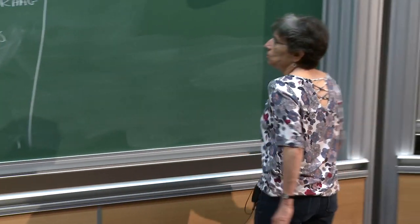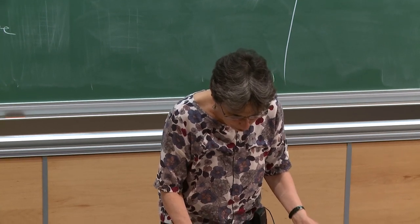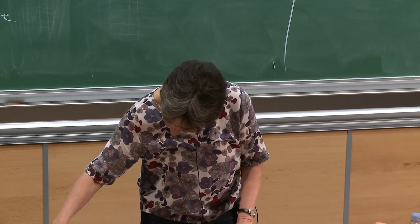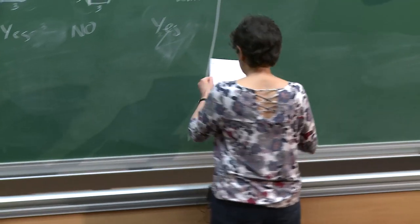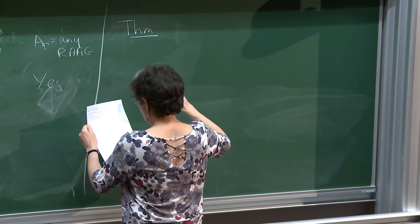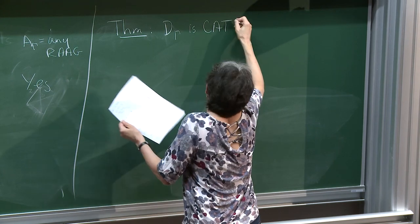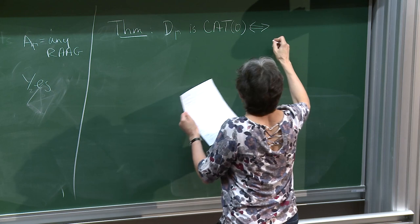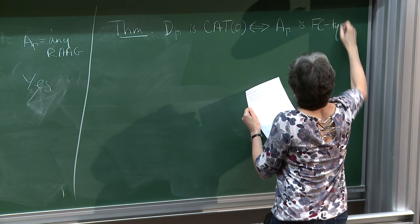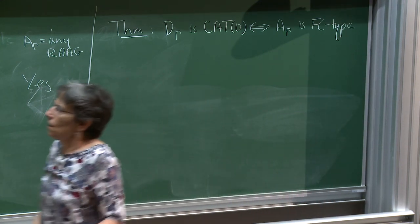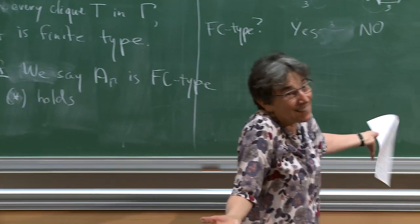So what's the point? We've more or less proved the following theorem: D(γ) is non-positively curved — equivalently CAT(0) — if and only if A(γ) is FC type. There are lots of nice infinite type Artin groups for which it is FC type, and lots for which it isn't.